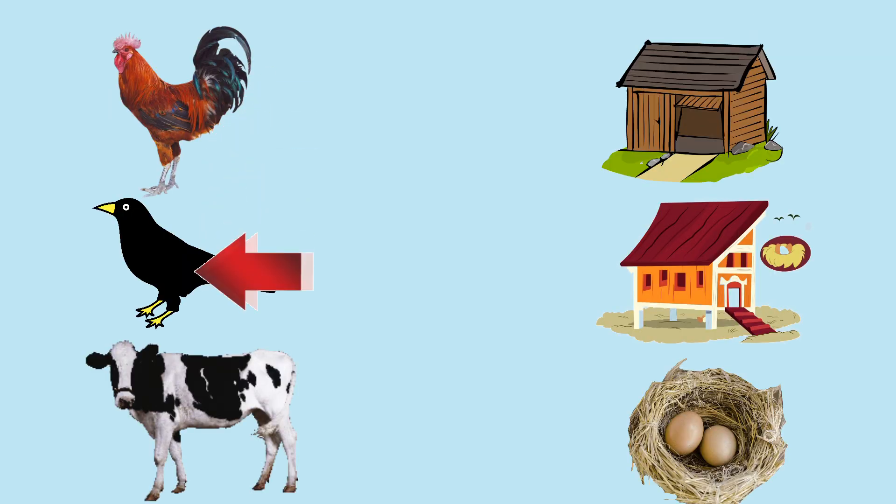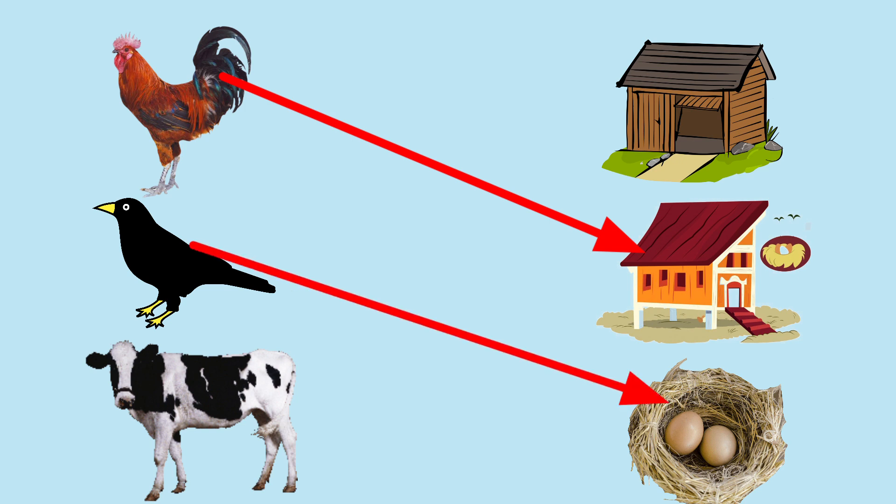Now, see hen, bird, and cow. Now, match. Hen, coop. Very good. Next, bird. Bird, nest. And last one, cow. Cow lives in shed. Very good performance.